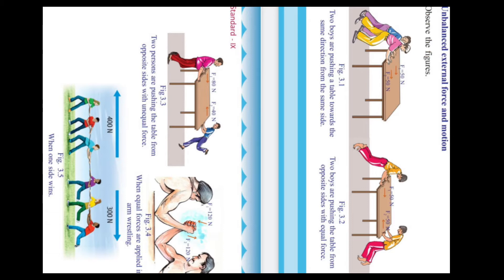Then the second figure — you can see that two persons are pushing the same table in opposite directions. Both of them are applying 50 newtons each. So what will be the total force or effective force? 50 minus 50 becomes 0. So that force is called balanced force. The first force is unbalanced — that is where the table moves.